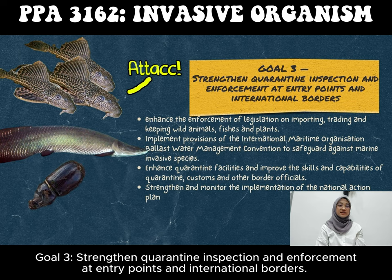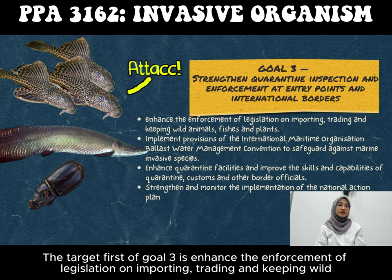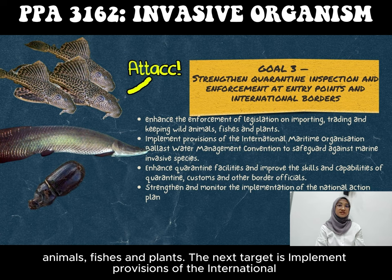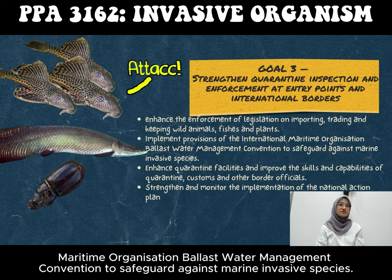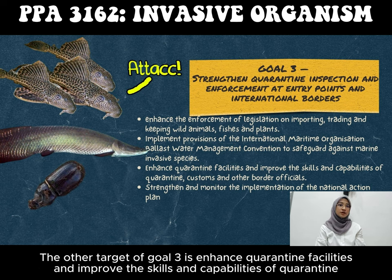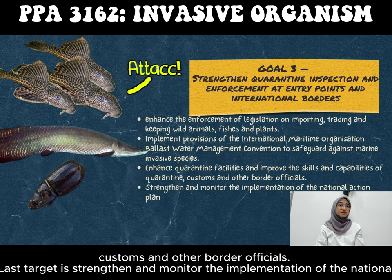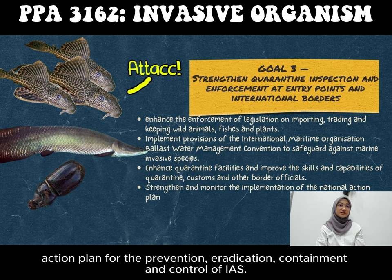Goal number 3 is to Strengthen Quarantine Inspection and Enforcement at Entry Points and International Borders. The first target of Goal 3 is to enhance the enforcement of legislation on importing, trading, and keeping wild animals, fishes, and plants. The next target is to implement provisions of the International Maritime Organization Ballast Water Management Convention to safeguard against maritime invasive species. Another target is to enhance quarantine facilities and improve the skills and capabilities of quarantine, customs, and other border officials. The last target is to strengthen and monitor the implementation of the National Action Plan for the Prevention, Eradication, Containment, and Control of IAS.